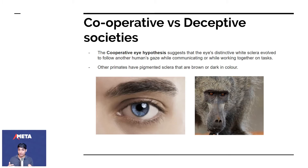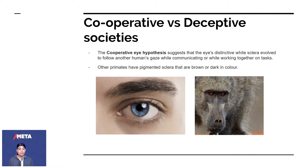The cooperative eye hypothesis suggests that the eye's distinctive white sclera evolved to follow another human's gaze while communicating or working together on tasks. You can see two product managers when they're talking about mock-ups — they're both looking at the same thing — so you know where another person's attention is.